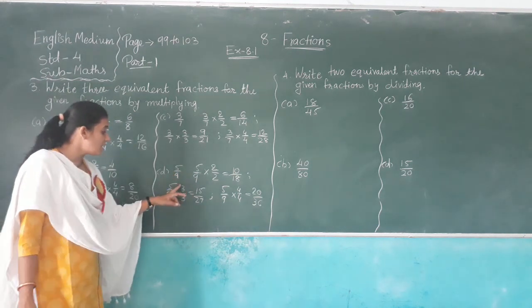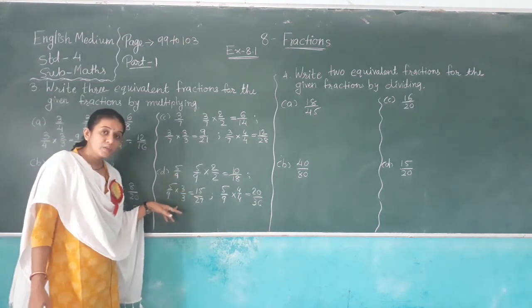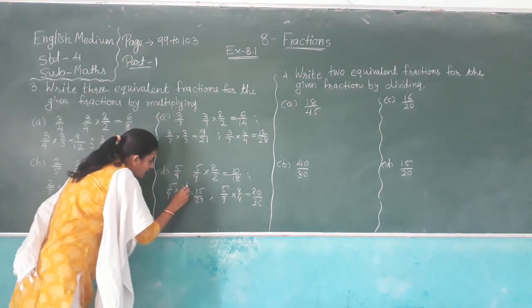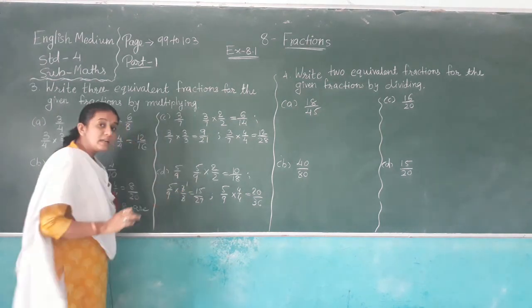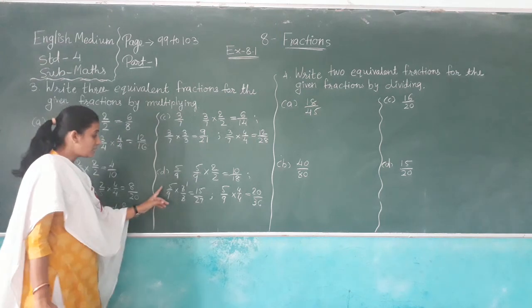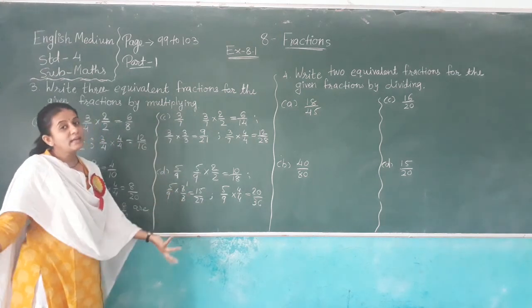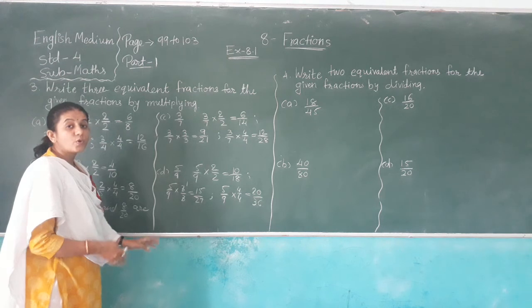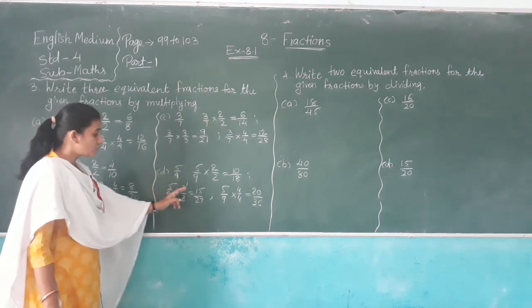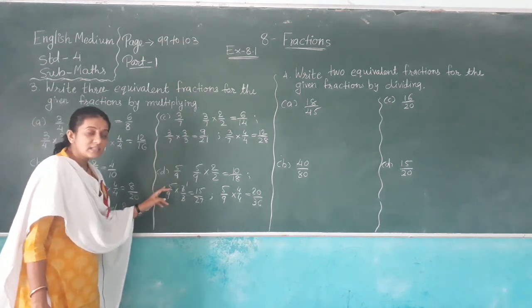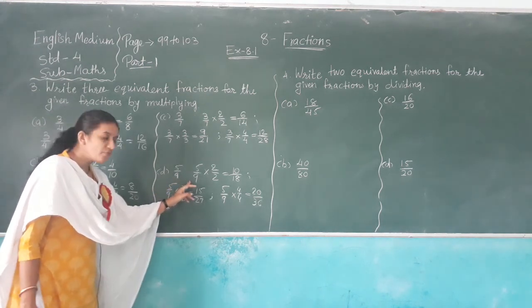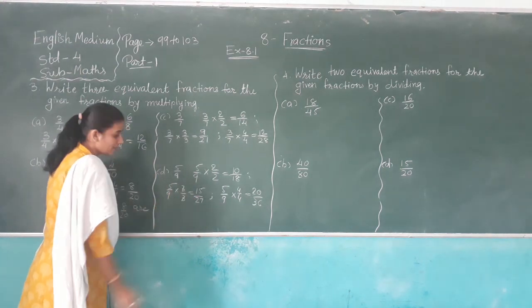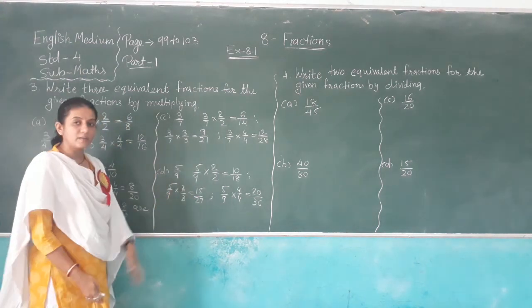Why do we take three over three? Because three ones are three, and any number multiplied by one gives the same answer. So we multiply the fraction by one — indirectly and directly, we multiply by one.